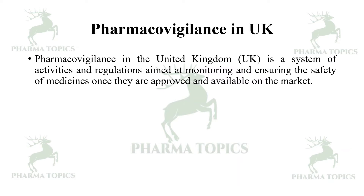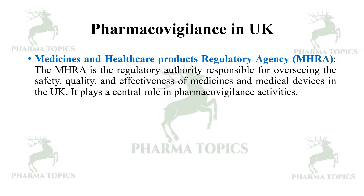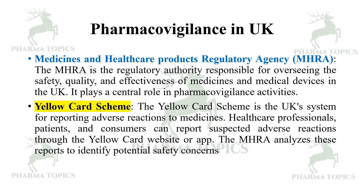Pharmacovigilance in the UK is a system of activities and regulations aimed at monitoring and ensuring the safety of medicines once they are approved and available on the market. The UK has a well-established pharmacovigilance framework involving regulatory authorities, healthcare professionals, pharmaceutical companies, and patients working together to detect, assess, and manage risks associated with medications. The Medicines and Healthcare products Regulatory Agency (MHRA) is responsible for overseeing the safety, quality, and effectiveness of medications and medical devices. The Yellow Card Scheme is the UK system for reporting adverse events; healthcare professionals, patients, and consumers can report suspected adverse events through the Yellow Card website or app, and the MHRA analyzes these reports to identify potential safety concerns.